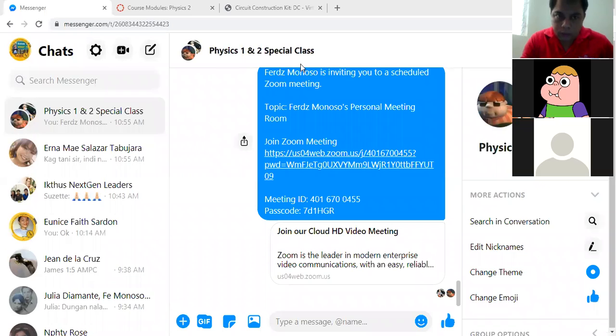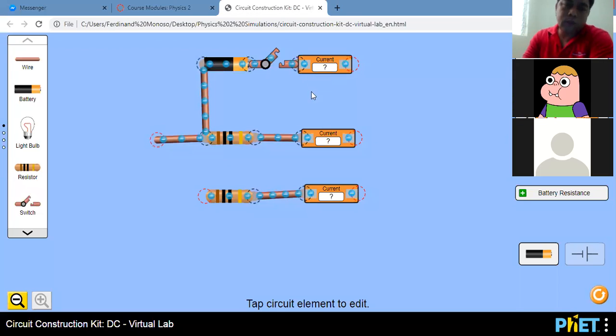So we are now on our simulator, and let's see if we are able to see. We attached earlier three resistances. So these are two resistances.